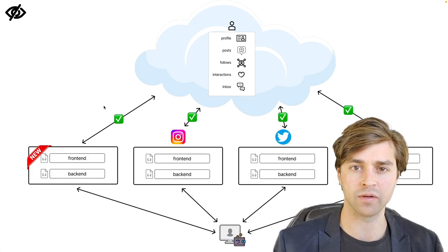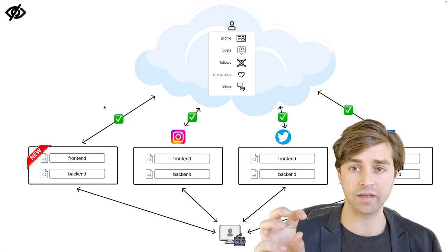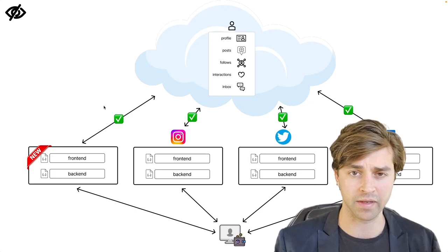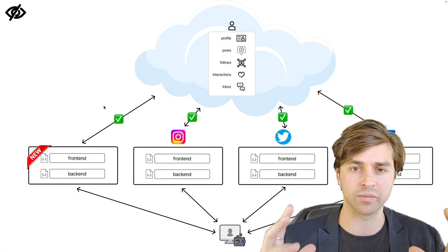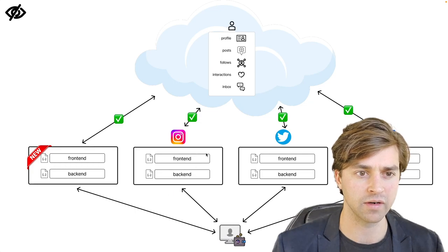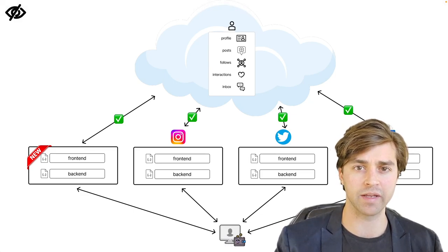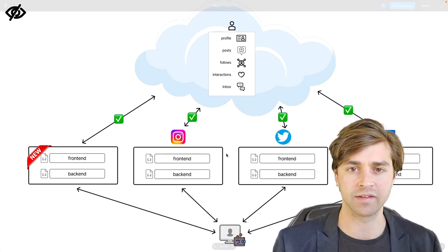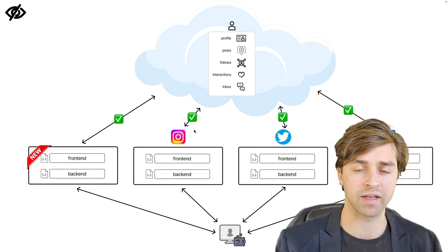So Web3 changes this. Web3 ensures data privacy for the end user by changing the application architecture. Instead of user application data living inside of a central database owned by a company, application data is stored in a user's personal data store or PDS. You can think of a personal data store as a personal cloud drive where all user application data is stored. So my Instagram data is no longer stored on Instagram's server, but it's stored in my personal data store, which only I have access to via my Web3 wallet. Only I with my Web3 wallet can read and write to this personal data store, and by default, applications do not have access to my data.